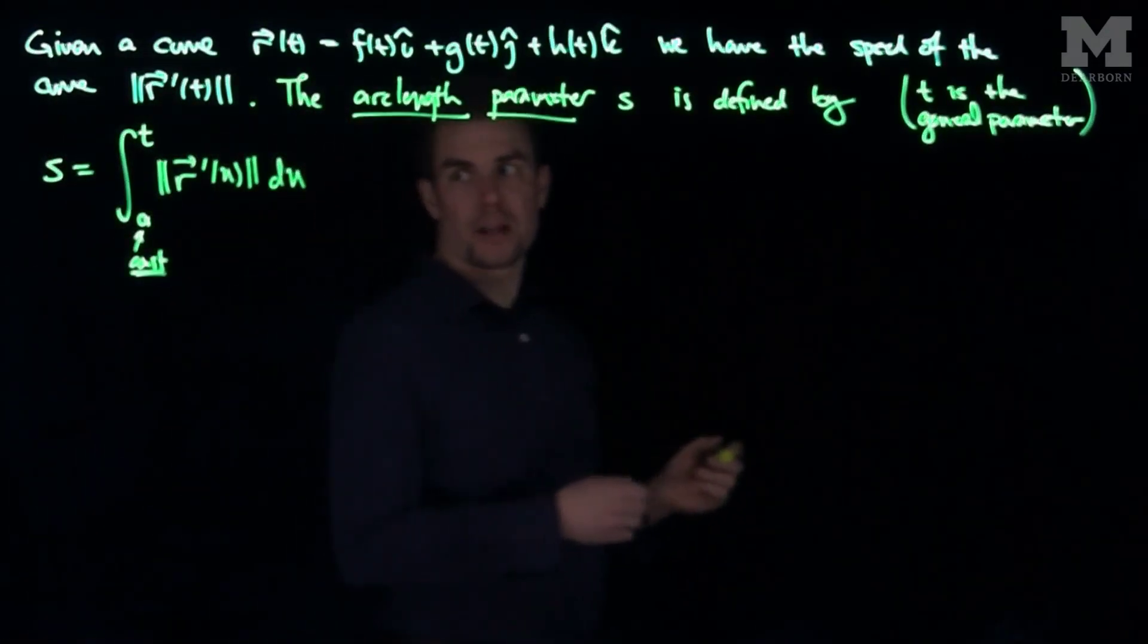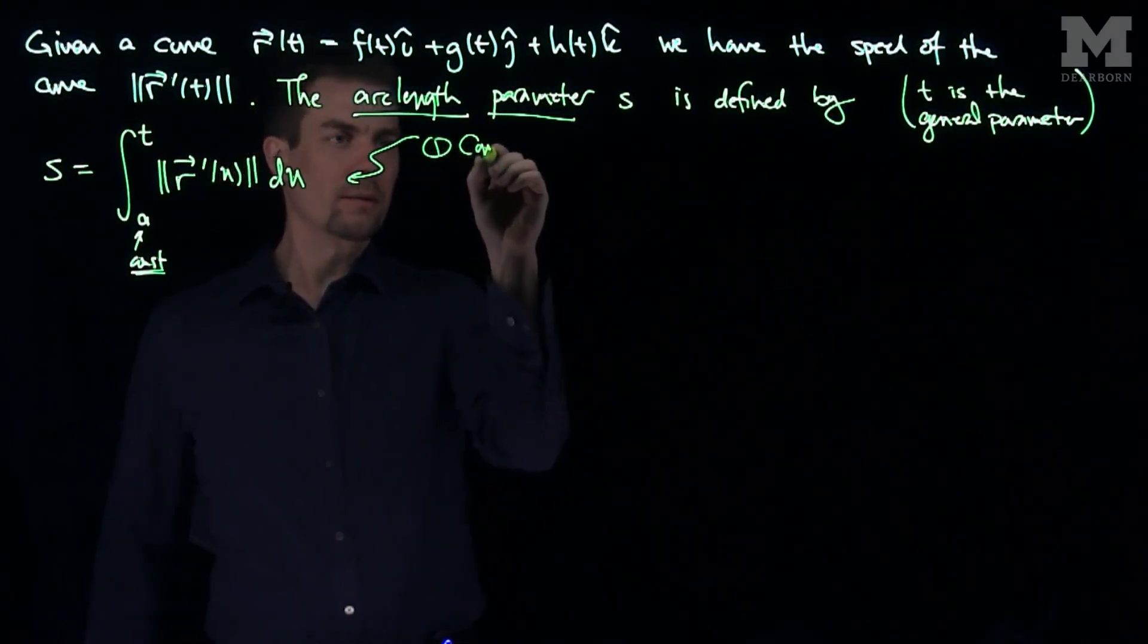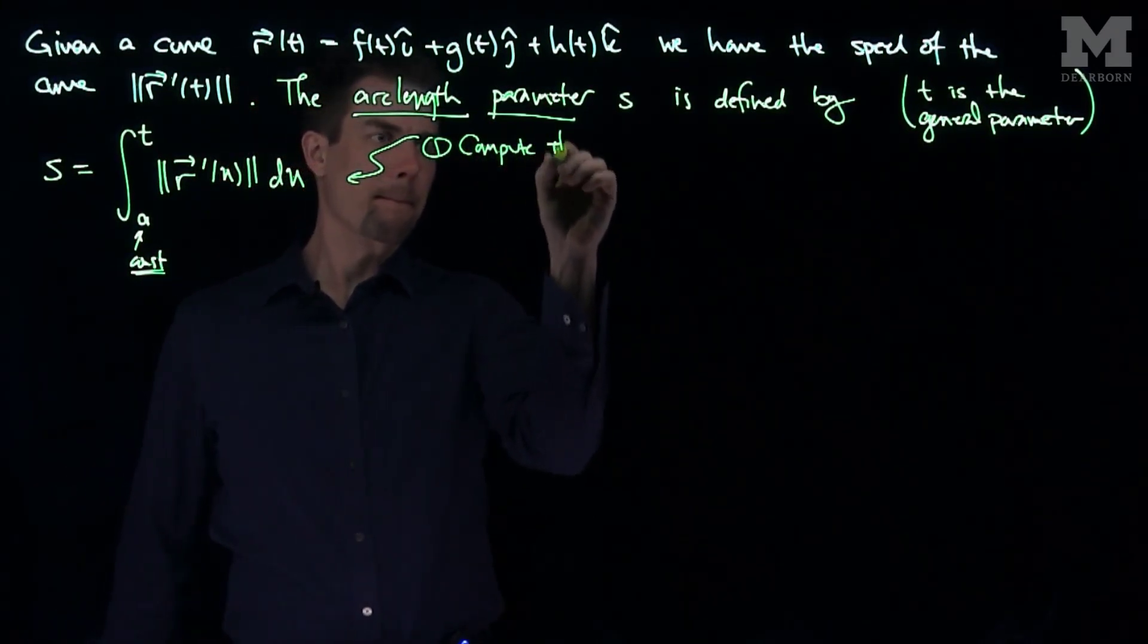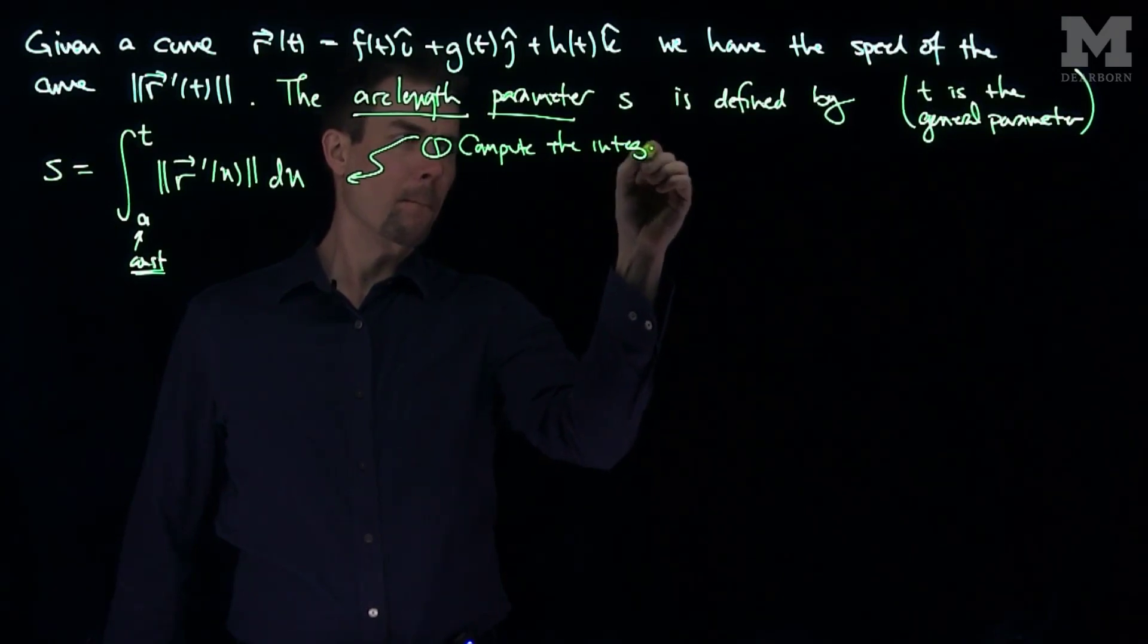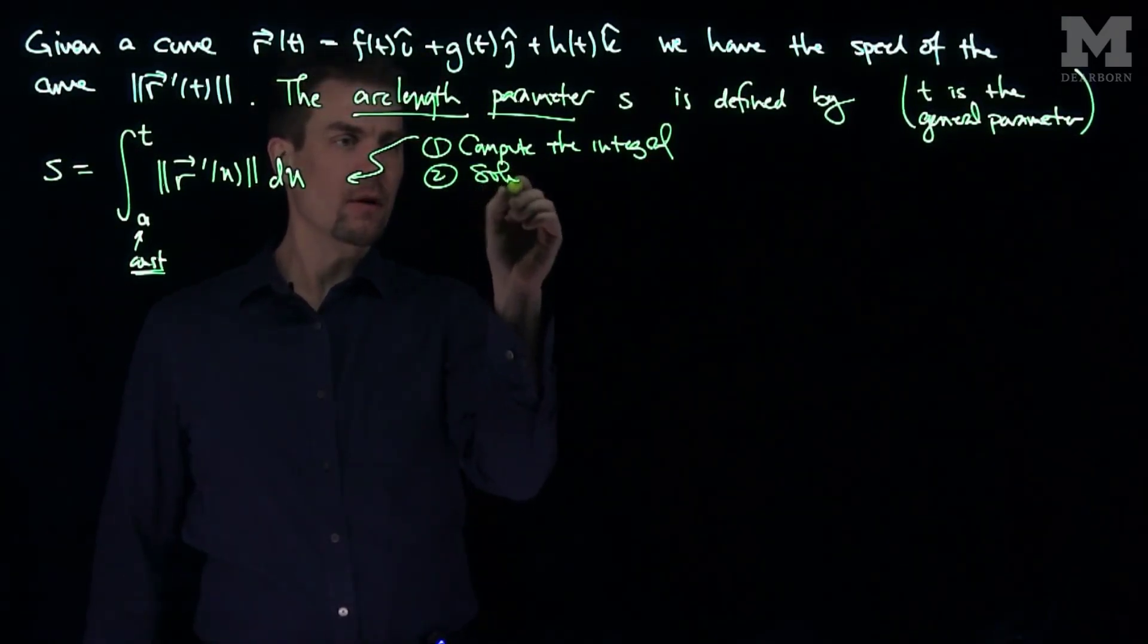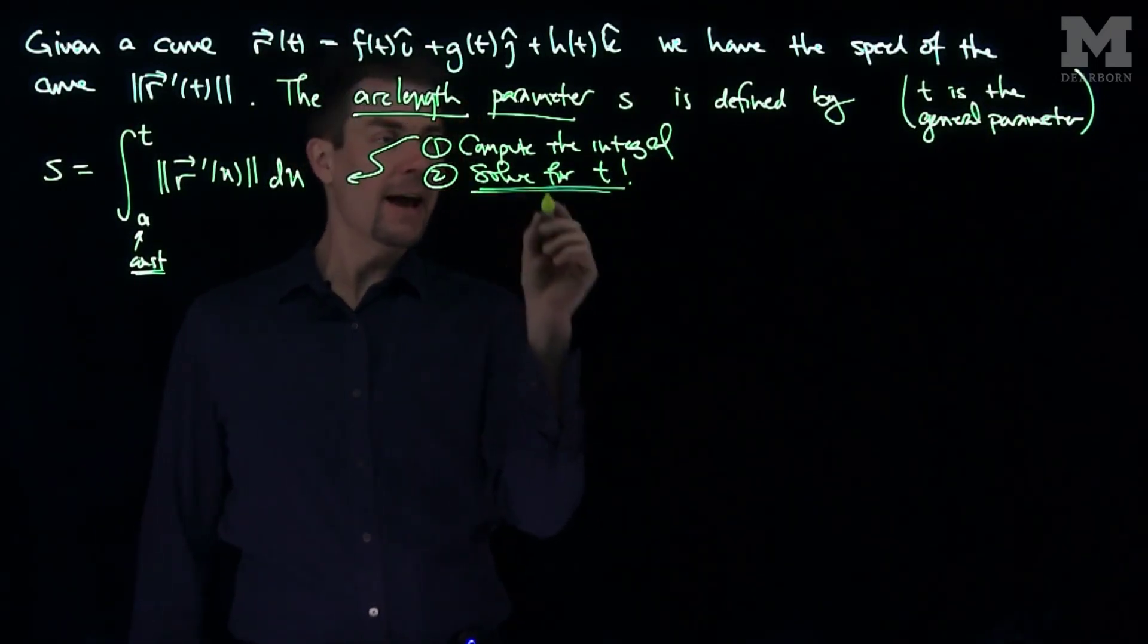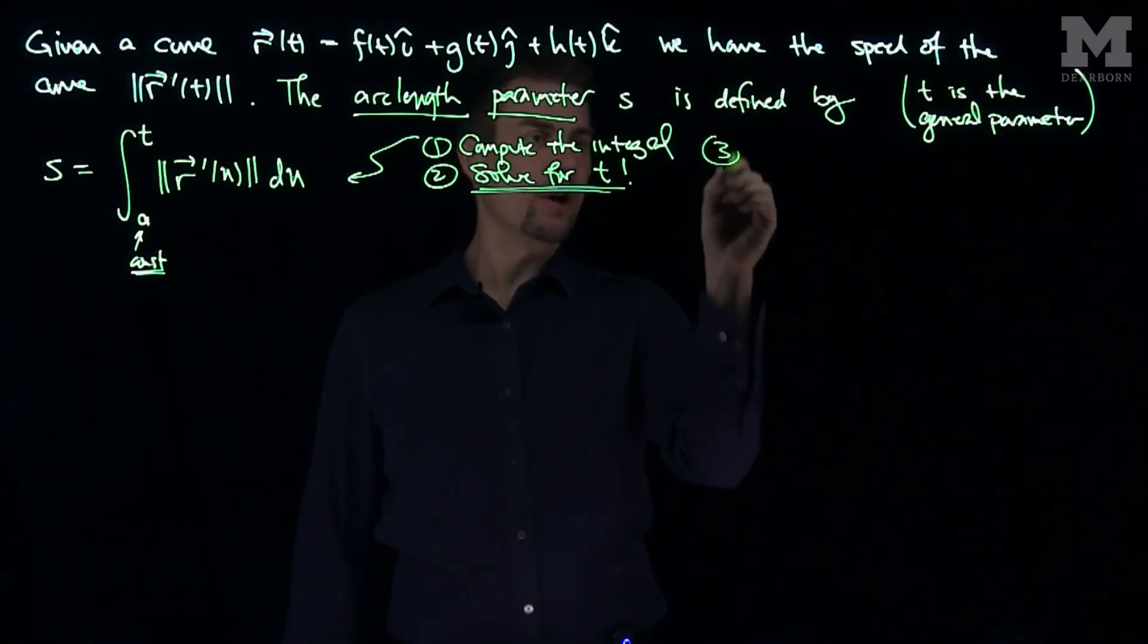Our procedure to find arc length parameter is to: one, compute the integral, and two, solve for t. We must solve for t, and after we solve for t, we plug that back into the equation.